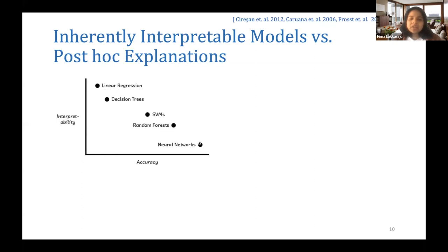is that while models such as neural networks are very accurate, they're not very interpretable, and while models such as linear regression or shallow decision trees are very interpretable, they're not quite accurate. So there seems to be this kind of trade-off between interpretability and accuracy.